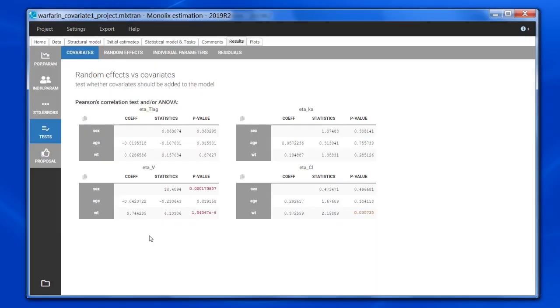For continuous covariates, such as weight, we perform a Pearson correlation test between the covariate and the random effects. We do so for each pair of covariate and random effects, independently of the other random effects and covariates. The resulting p-values are displayed here.